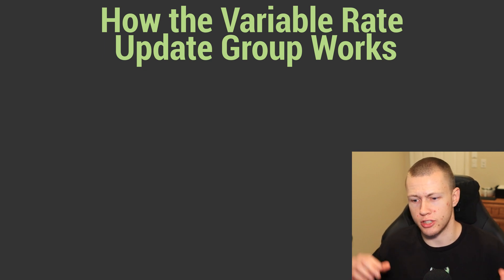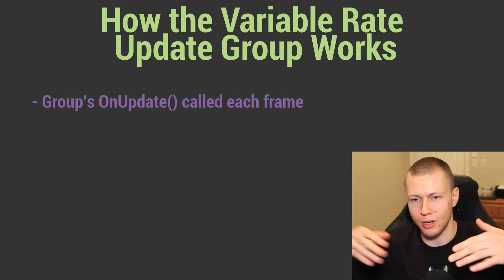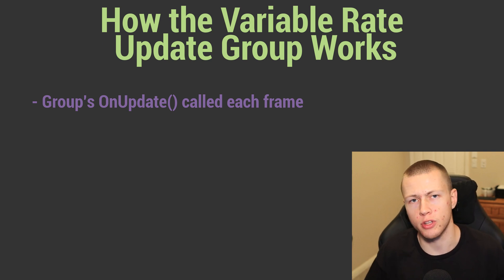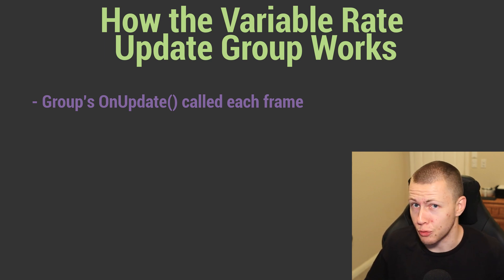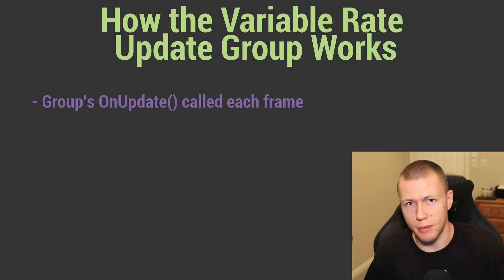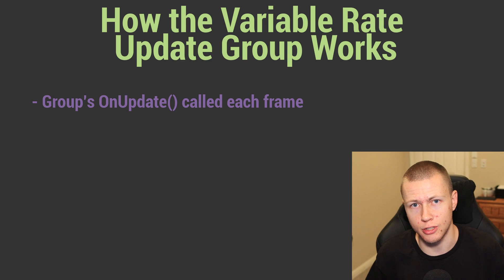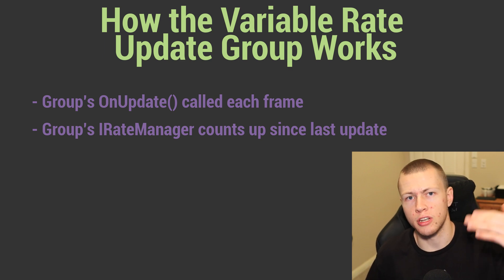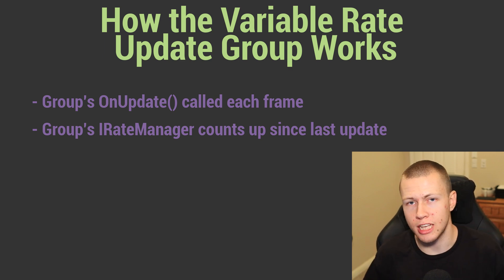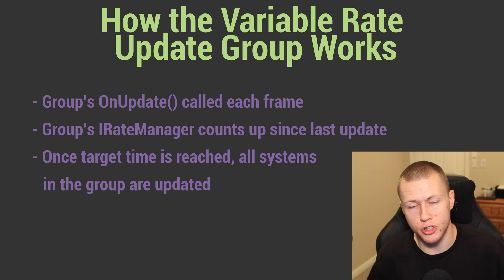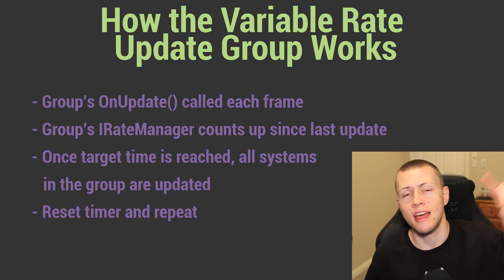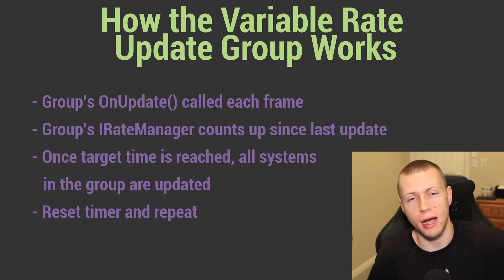The way this works is actually a little interesting. The actual base rate group — the one we assign systems to — is of type ComponentSystem, which has its own basic system lifecycle with an update method. That update method is still going to be called every single frame no matter what we pass into the IRate Manager. Basically, inside that OnUpdate function it's going to keep a counter of how long it's been since the previous update was triggered. Once we get to the value specified in the IRate Manager, it triggers the update for all systems under that group, resets its counter, and then continues counting back up.